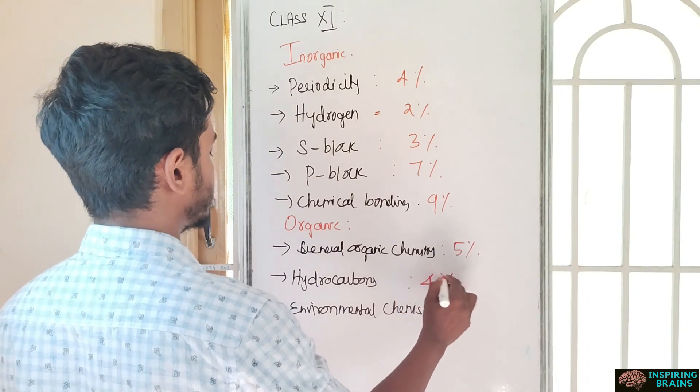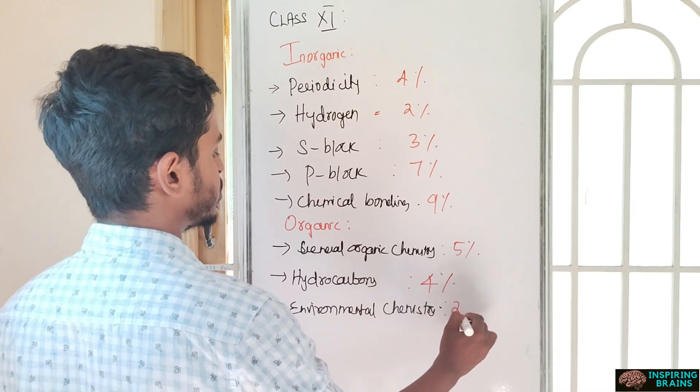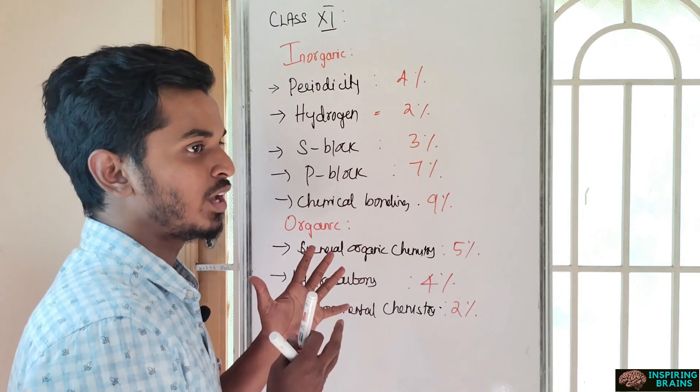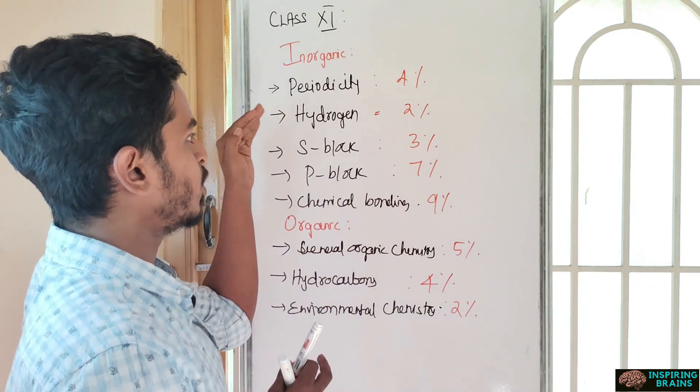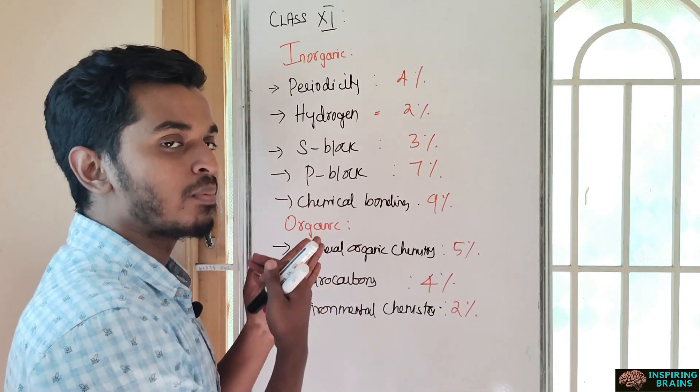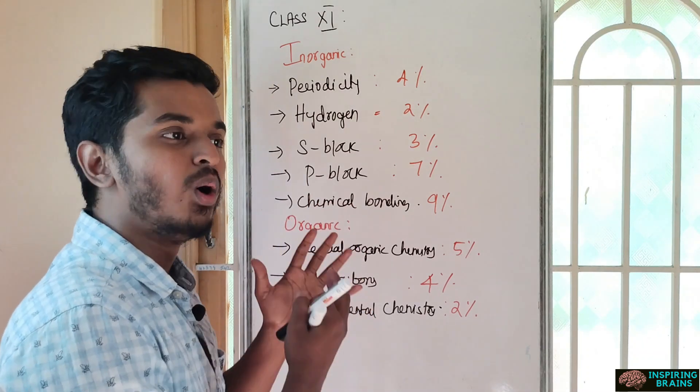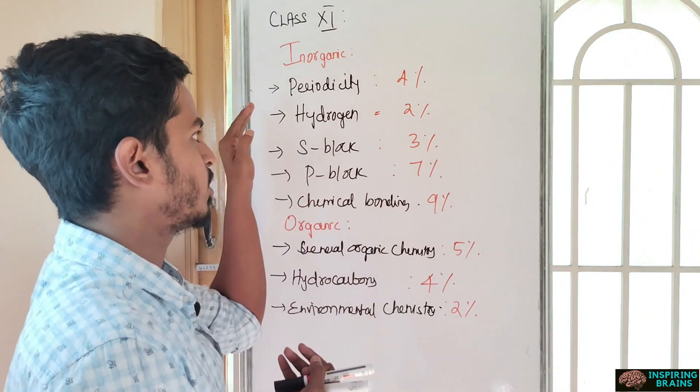General organic chemistry will be 5%, hydrocarbons 4%, and environmental chemistry is 2%. Periodicity covers the periodic table - this is a general topic in which all the S block, P block, and F block will be covered. You have to arrange elements by atomic radii or size.